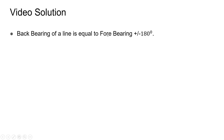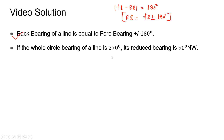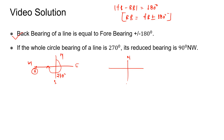Coming to the video solution: Statement A — back bearing of a line equals fore bearing plus/minus 180 degrees — is correct, since fore bearing minus back bearing equals 180 degrees. Statement B — if whole circle bearing is 270 degrees, the bearing is measured clockwise from north. In QSB, the reference line nearest to the point is used; the reduced bearing comes out to 90 degrees west of north, written as N 90° W.